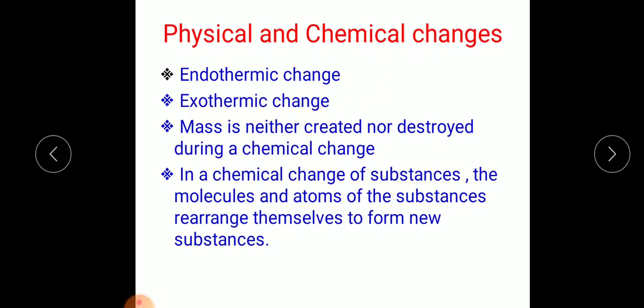Next, mass is neither created nor destroyed during a chemical change, as we have known from the previous chapter on matter. In a chemical change of substances, the molecules and atoms of the substances rearrange themselves to form new substances. So whenever a chemical change takes place, there is a rearrangement of molecules and atoms to form new substances.